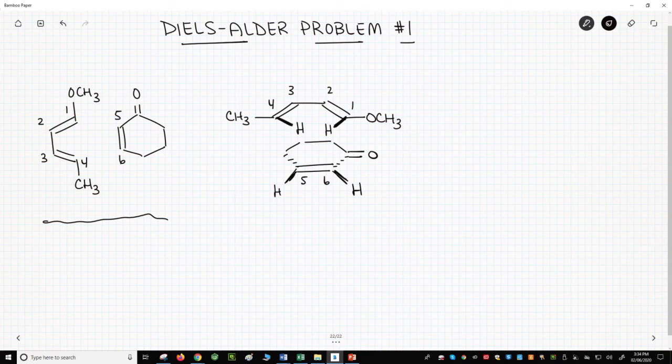To get the product, we just draw our cyclohexene and add all the other pieces. Here is our cyclohexene. Don't forget to number the carbons.